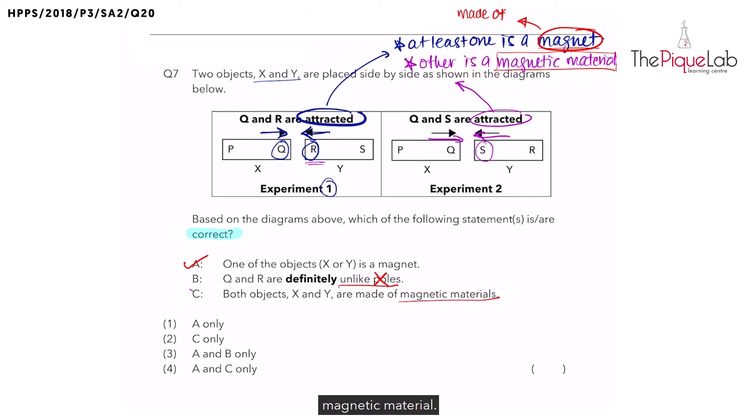So since we have one object which is a magnet, it is made of a magnetic material, and the other is also magnetic material. So yes, both are made of magnetic materials and therefore this statement is correct.